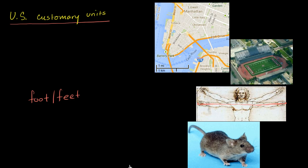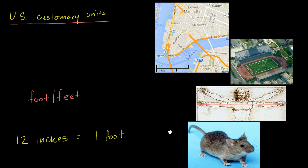If you want to measure things smaller than a foot, or parts of a foot, then you would go to the inch. The relationship between the foot and the inch is that 12 inches are equal to one foot. For example, this little mouse right over here — it might be reasonable to measure it in inches. It's also useful for human height, since very few people are a whole number of feet. For example, I am five feet and nine inches.